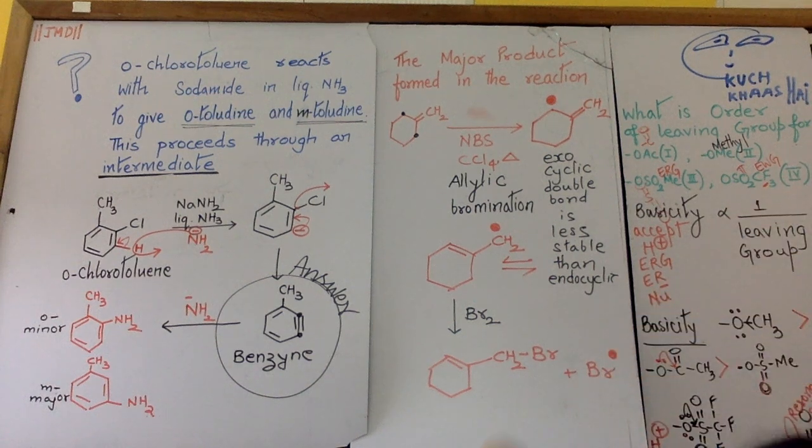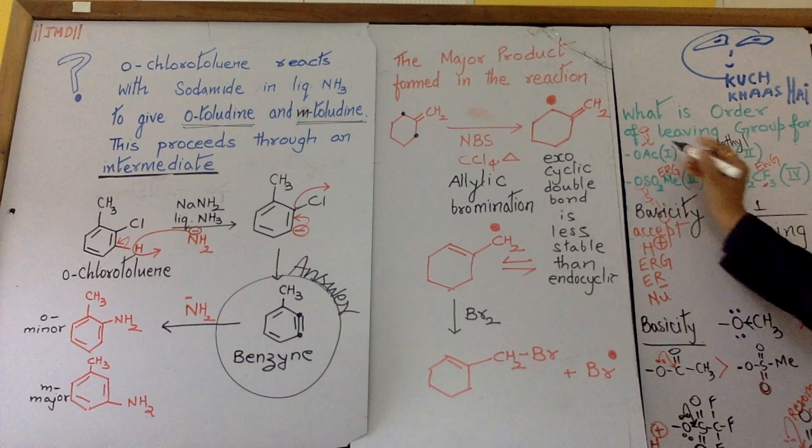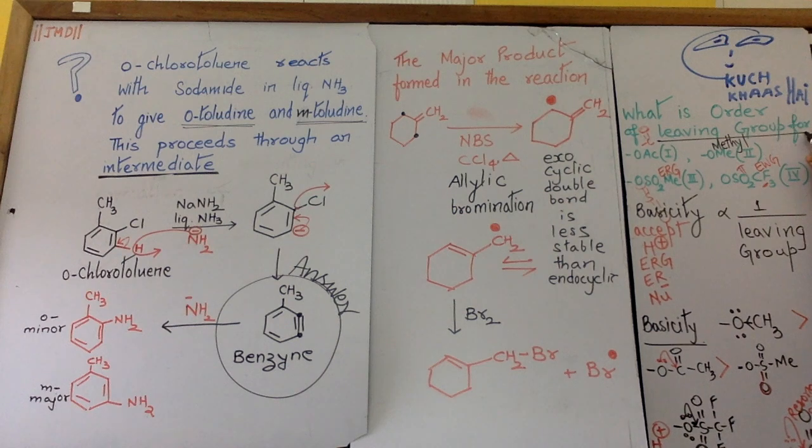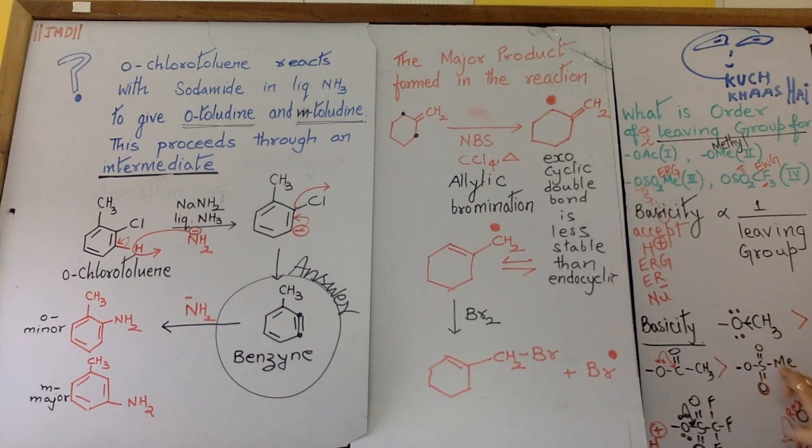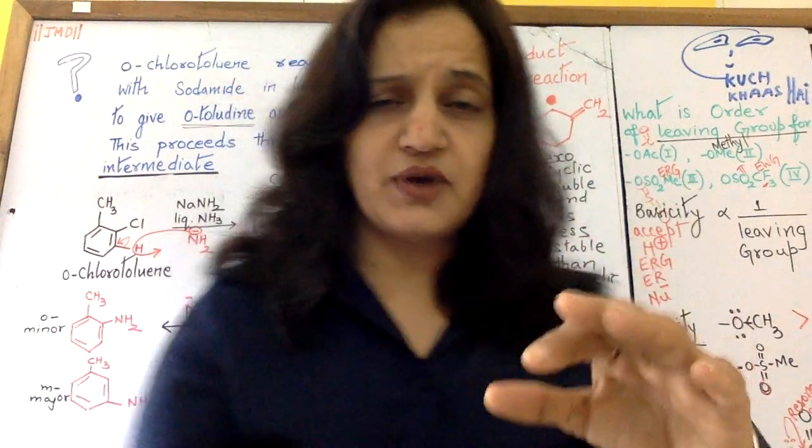Exactly opposite will be the order of leaving group. What will be the order of leaving group? Order will be exactly opposite: this less than this, less than this, less than last one. Just have to change the sign. So I hope it is clear to you.